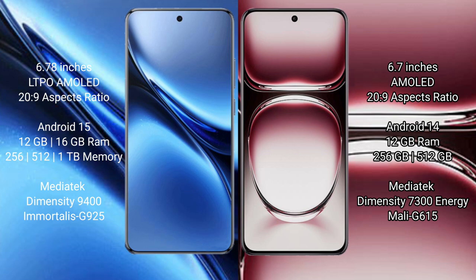Vivo X200 Pro comes with 12GB or 16GB RAM and 256GB, 512GB, or 1TB internal storage, with a MediaTek Dimensity 9400 processor and GPU Mali G925. Oppo Reno 12 Pro comes with 12GB RAM and 256GB or 512GB internal storage, with a MediaTek Dimensity 7300 processor and GPU Mali G615.